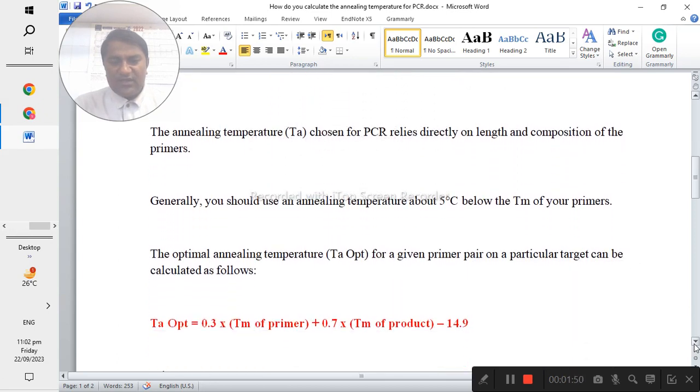Generally, you should use an annealing temperature about 5 degrees below the melting temperature of your primers. The optimal annealing temperature for a given primer pair on a particular target can be calculated as follows.